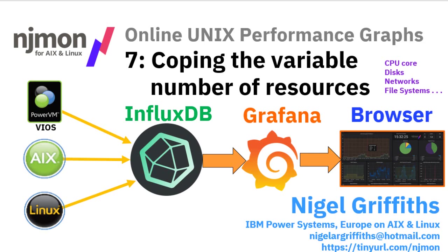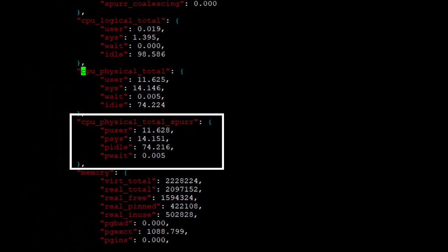In this one we're looking at more advanced techniques with the graphs. What happens when we want to create a graph that has multiple resources? Things like CPUs have lots of cores, we have lots of disks, lots of networks, file systems — a whole bunch of things like this. Each different server has a different number of these resources, and if we use a template you can't work out how to do that. Well, we can — there's a very clever way of doing that with Grafana, and InfluxDB actually helps out, and we'll cover that in this movie.